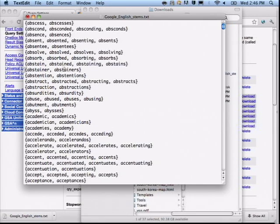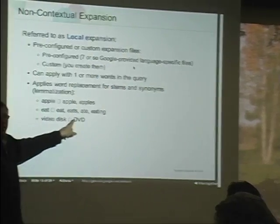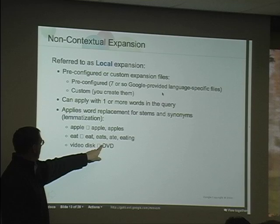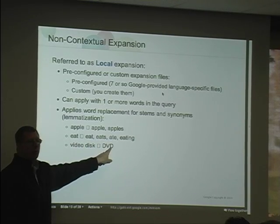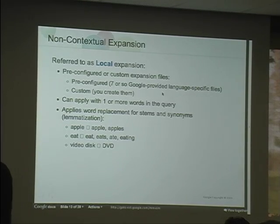So if a user runs 'abstainers', the search will also run 'abstainer'. There should be an equal sign syntax available. You can also use a greater-than symbol for a one-way direction. So 'video disk' would also be replaced with 'DVD', but 'DVD' would not be replaced with 'video disk'. You can do a one-way mapping if you want, with one entry per line.